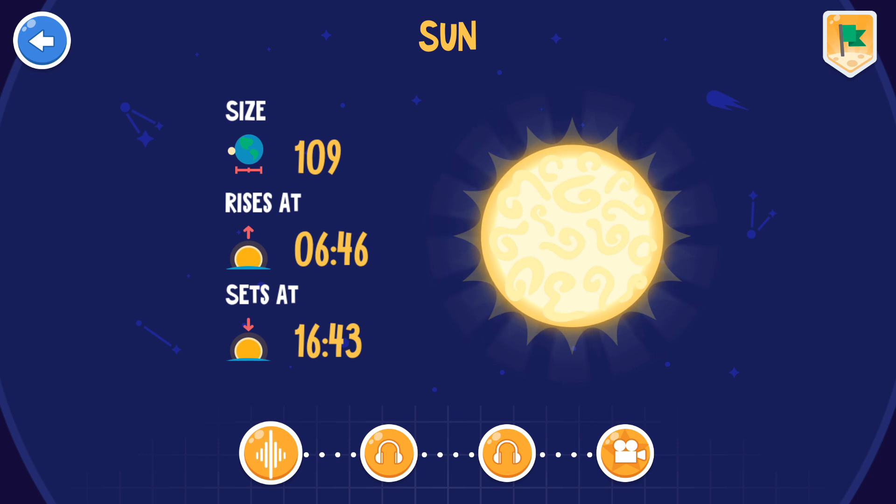It takes sunlight an average of 8 minutes to reach the Earth. The Sun is one of the 100 billion stars of our Milky Way galaxy.